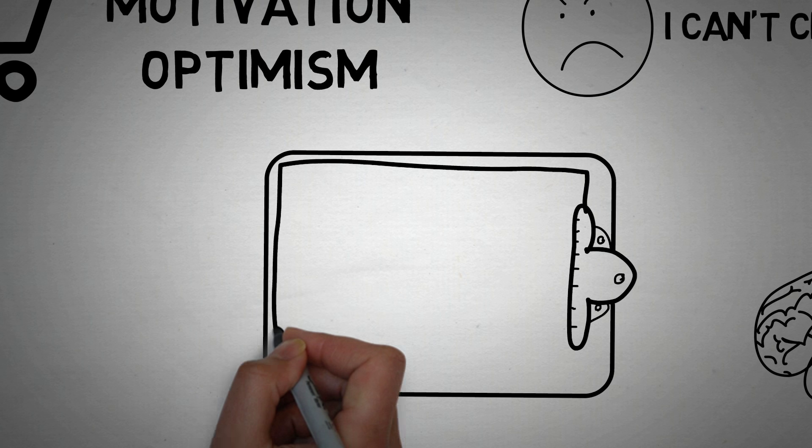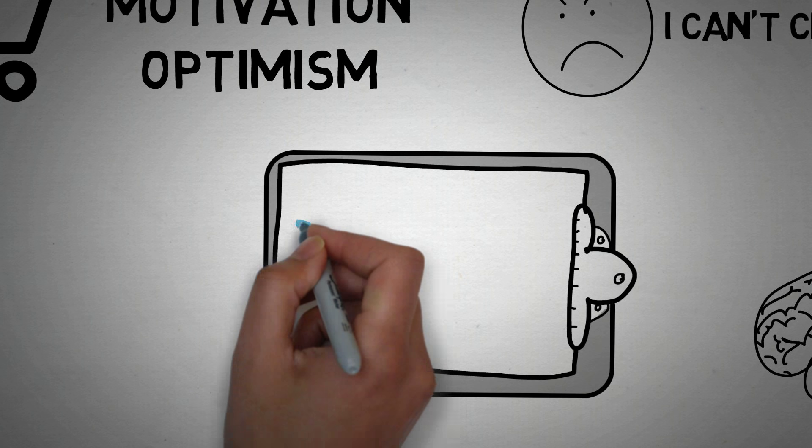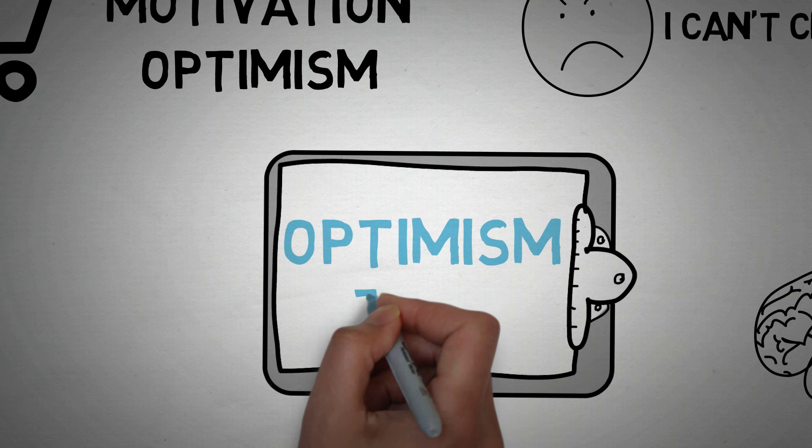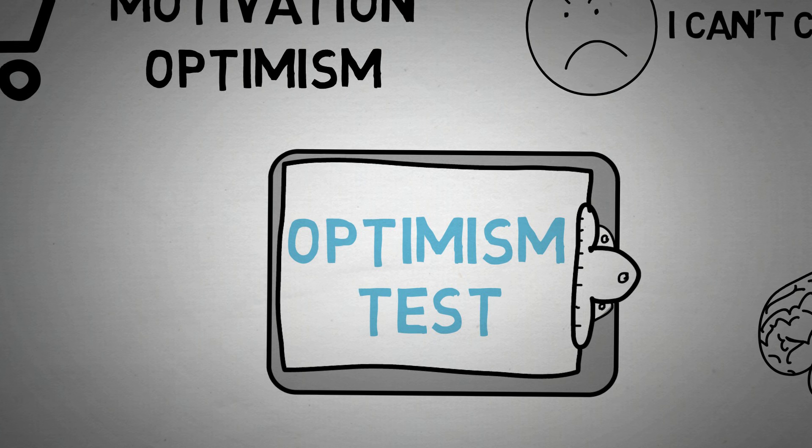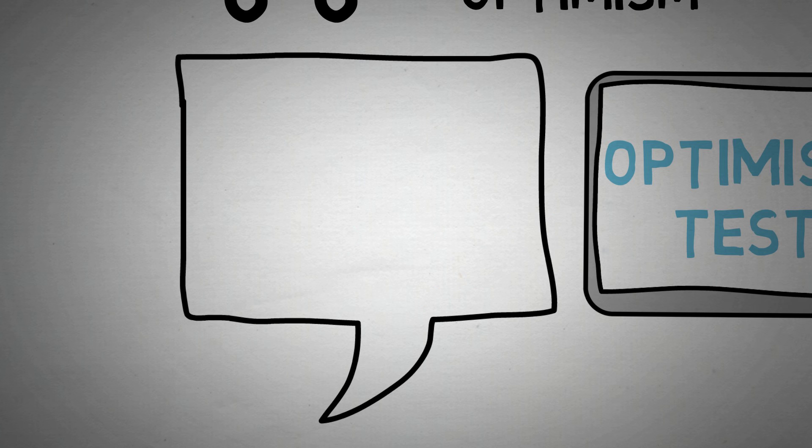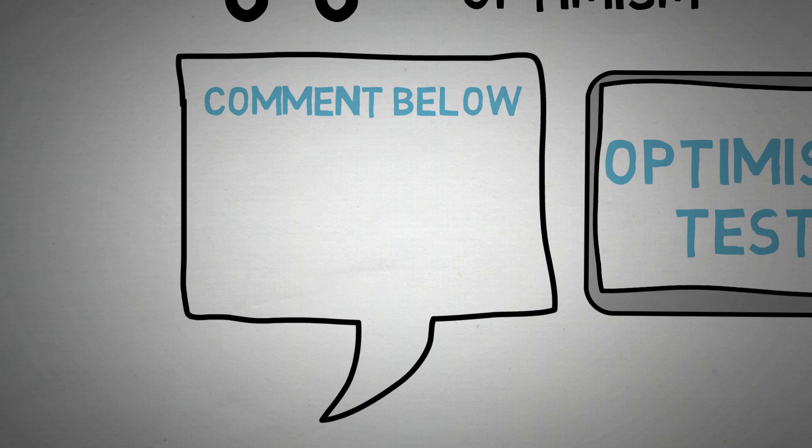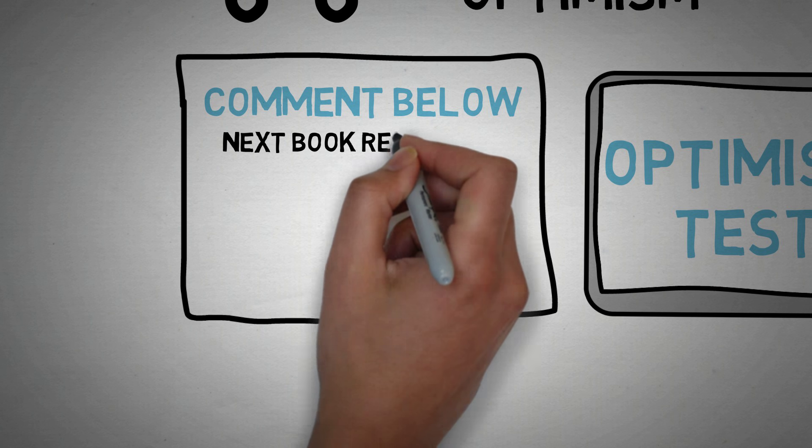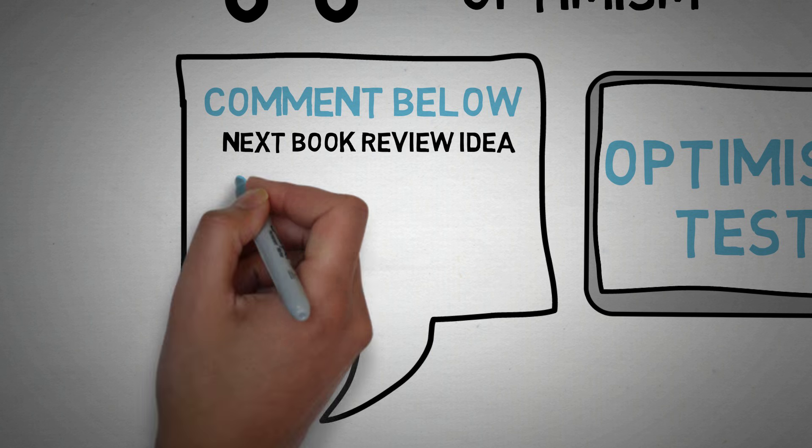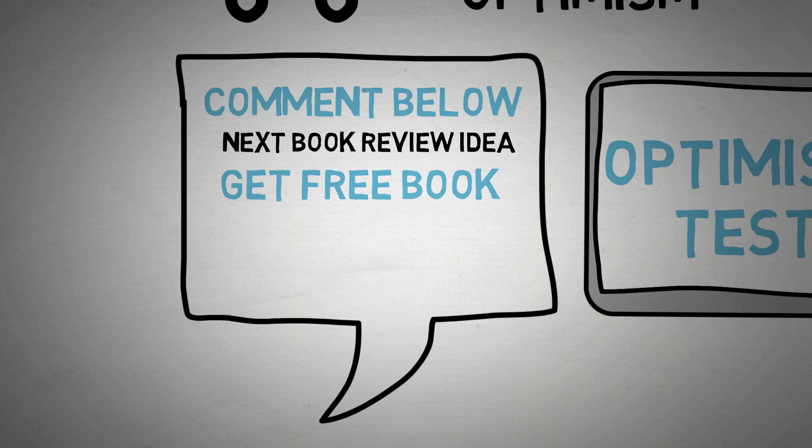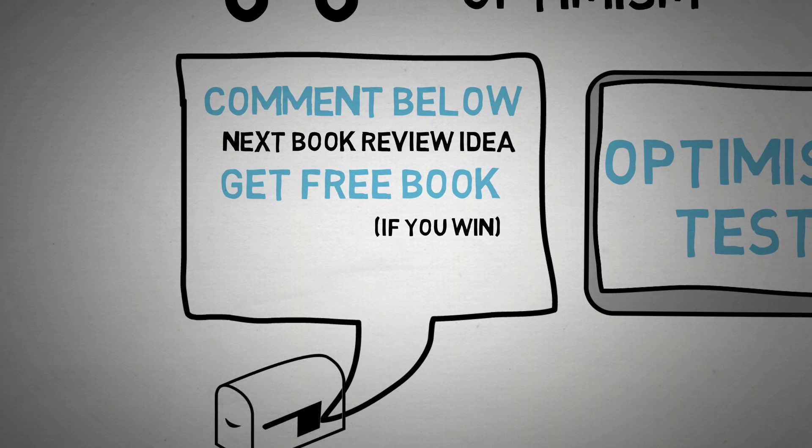I want to say that there is actually a test you can take in this book. You answer, I think it's around 50 questions, and then you add up your scores and Dr. Seligman rates you on an optimist and pessimism scale. And if you leave a comment below within the next 24 hours of the next animated book review that I should do, and you win, I select you, I will ship the book to your house for free. All you have to do is leave a comment below of the next animated book review that you want to see.